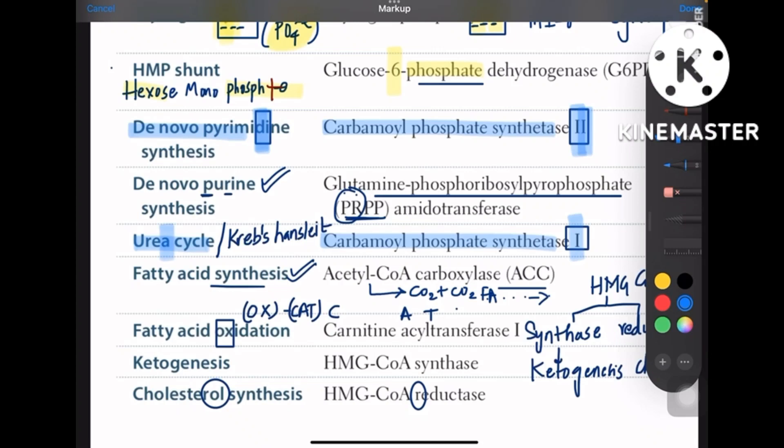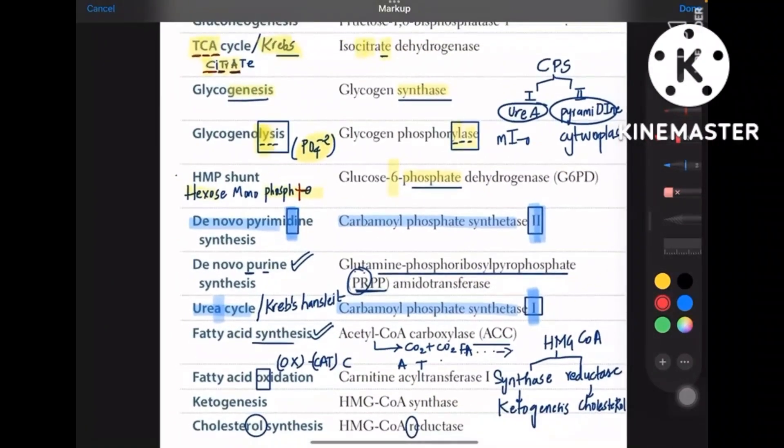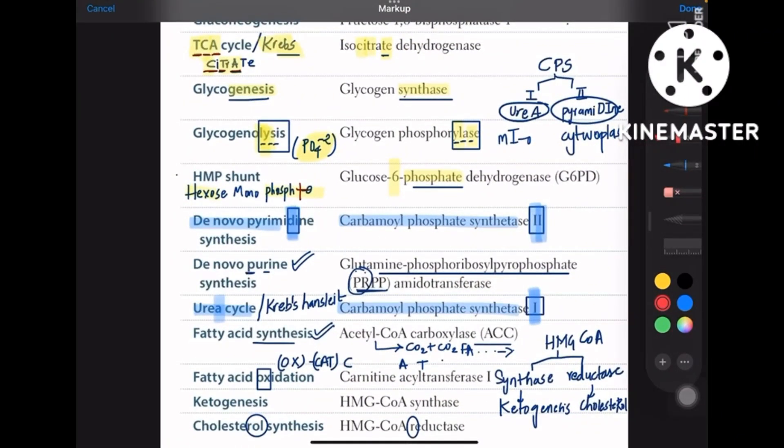And guys, here is an important point that TCA cycle, that is citrate cycle, is Krebs cycle, whereas urea cycle is Krebs handset. Actually we have a video which is a very short video, five minutes, on Krebs handset or urea cycle, so I have discussed every important detail of the cycle and the diseases related to that cycle.